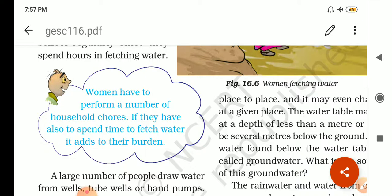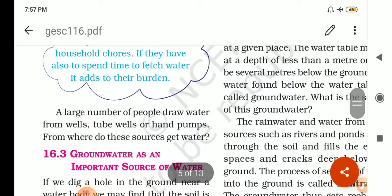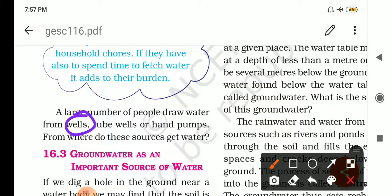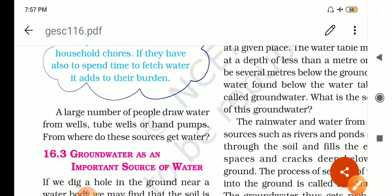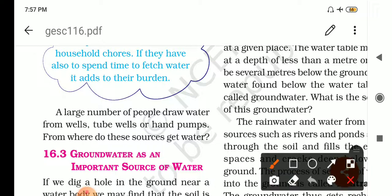Obviously a large number of people draw water from the wells. Yes, water is taken out from the well, tube wells with the help of tube wells and hand pumps. From where do these sources get water? It means well, tube well and hand pumps, these all take out the water from the ground.